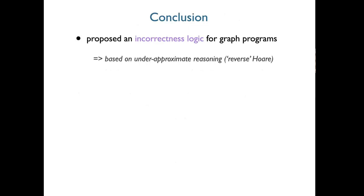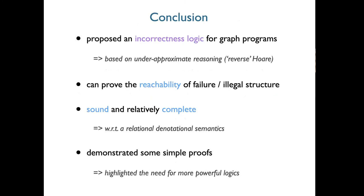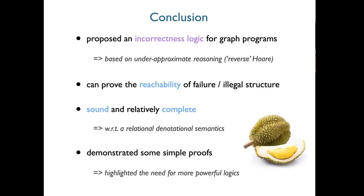In summary: we have an incorrectness logic for graph programs exploring under-approximate reasoning. We can prove the reachability of failure and illegal structure. It's sound and relatively complete, and we have some simple proofs — though these proofs also highlight that there's more to be done. It's durian season in Singapore; if you ever come visit in June onwards, I'll treat you to it.